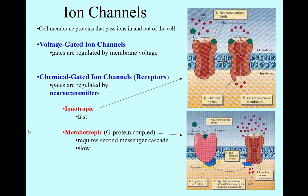They fall into two basic categories initially based on how they are gated, how the gates open. Some are gated by a change in voltage that travels along the membrane, so they're called voltage-gated ion channels.